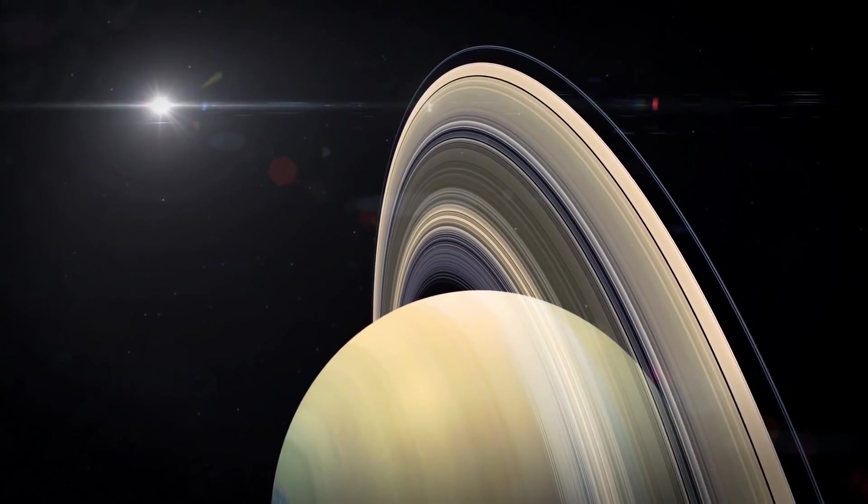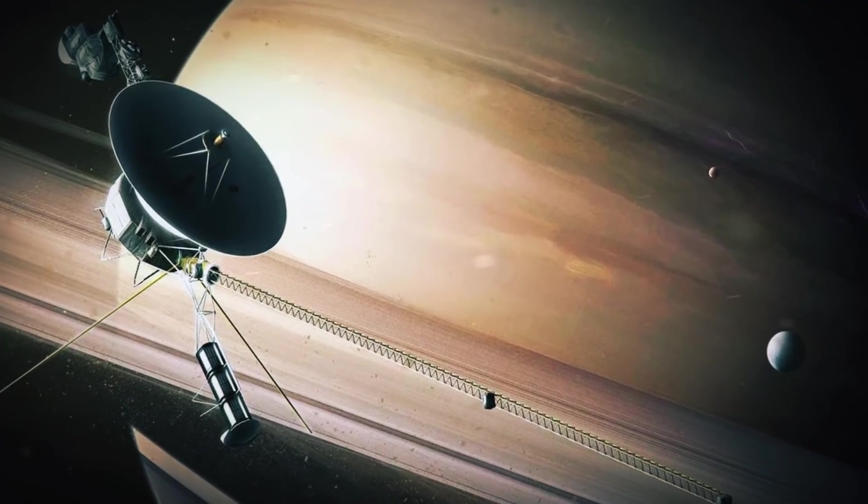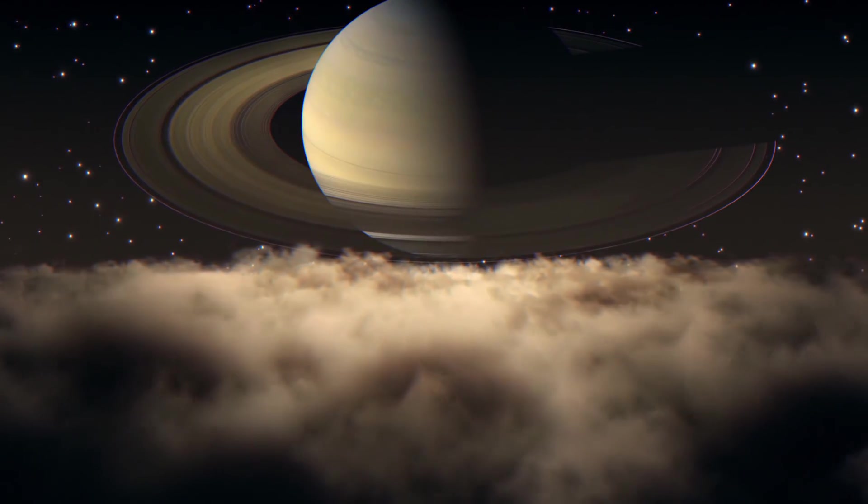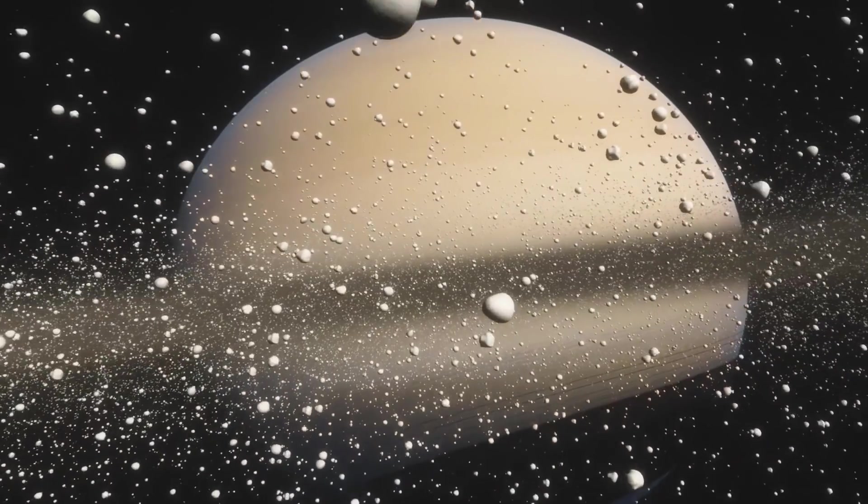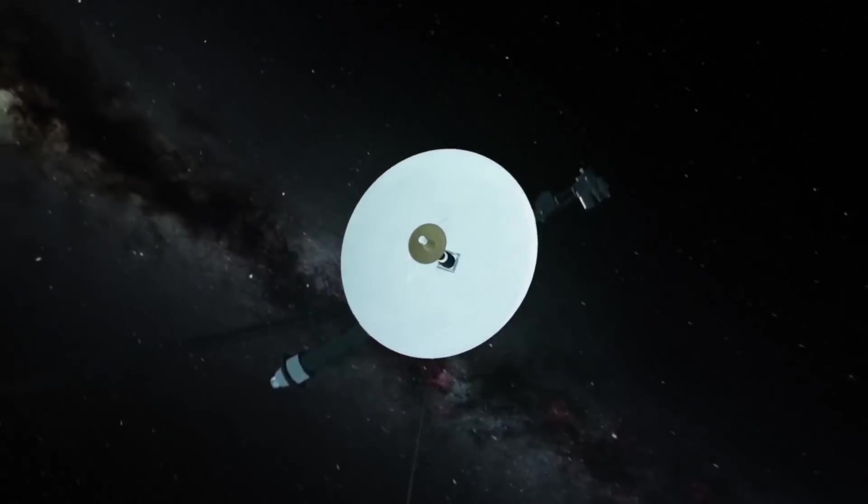When Voyager reached Saturn in 1980, it sent back breathtaking shots of the planet and revealed so much. It uncovered an additional moon, among many other things.